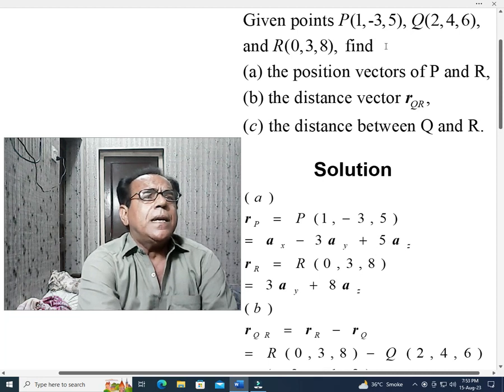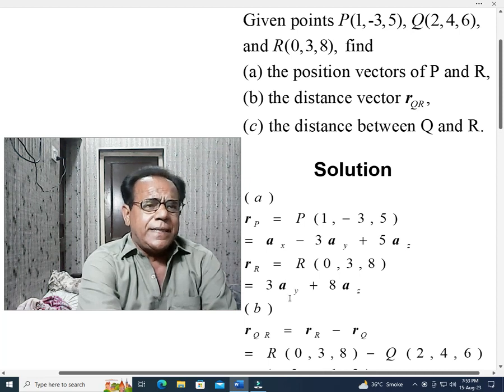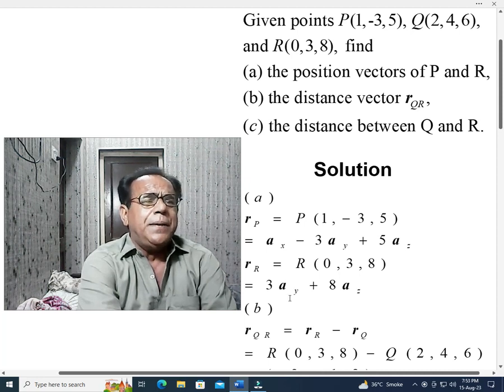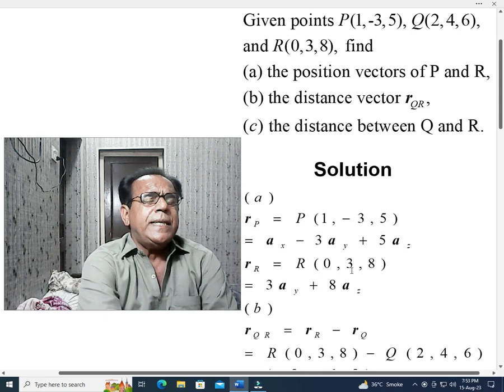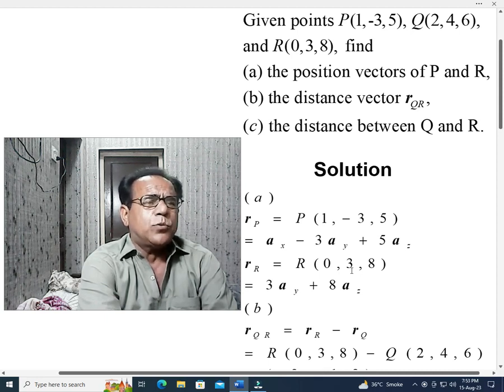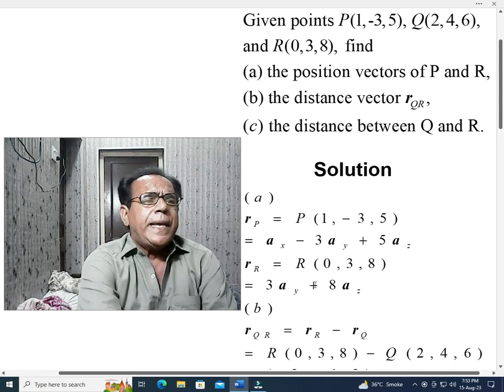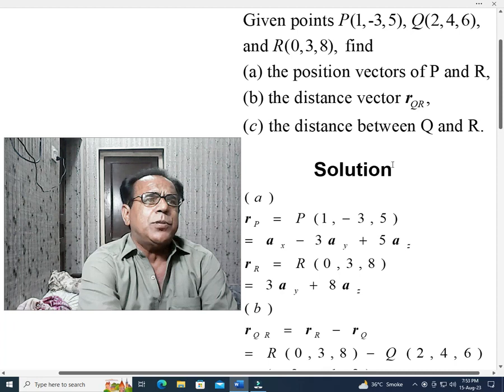Part A, position vector of P r_P equal to P(1,-3,5) which is given in the statement, and it can be written as a_x - 3a_y + 5a_z. Similarly, R is given as 0,3,8, so it can be written as 3a_y + 8a_z. So our part A has been solved.